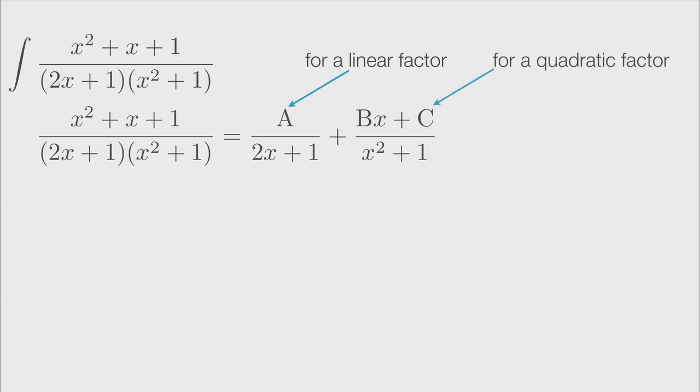If you have a repeated factor, in other words, 2 or more of the same factor, then you need to include a fraction for every degree of that factor lower than the factor itself. In other words, if the original denominator factors into the quantity x plus 1 cubed, then you have a factor of x plus 1 that's repeated three times. Your partial fraction decomposition should then include one fraction for x plus 1, another for x plus 1 squared, and another for x plus 1 cubed.